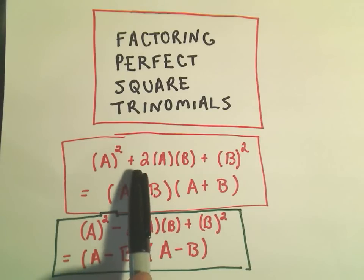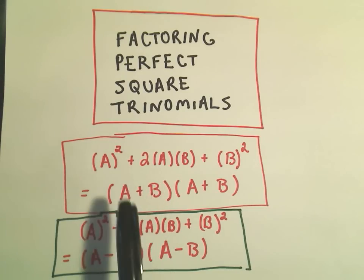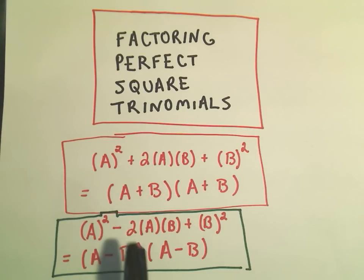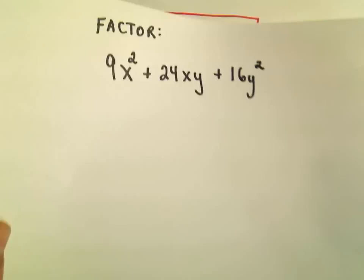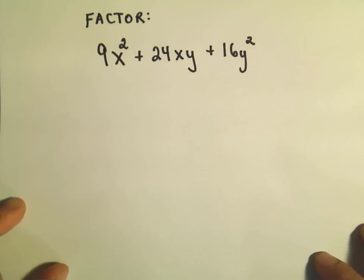If the coefficient on the ab term, instead of being positive 2, if it's a negative 2, the only thing that's going to change is inside the parentheses, you'll get a couple negatives. So in this one, let's factor 9x squared plus 24xy plus 16y squared.